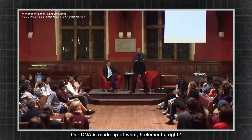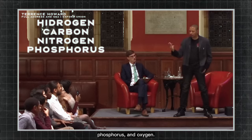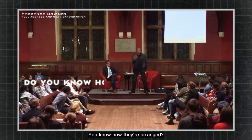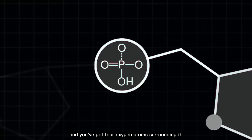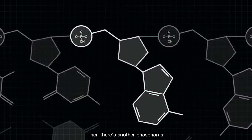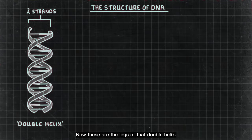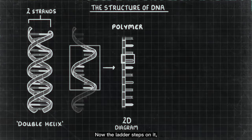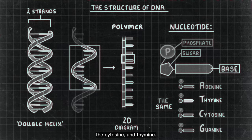Our DNA is made up of what? Five elements, right? Hydrogen, carbon, nitrogen, phosphorus, and oxygen. The phosphorus sits right here in the middle and you've got four oxygen atoms surrounding it. Then there's another phosphorus, two more oxygen atoms. Now these are the legs of that double helix. The ladder steps on it — they become the adenine, the guanine, the cytosine, and thymine. The ATCGs.